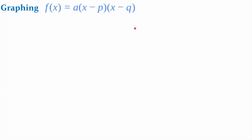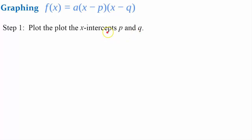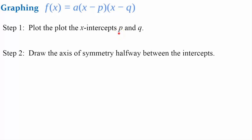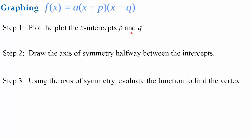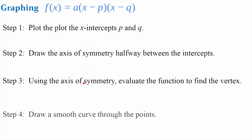Let's go through the steps of graphing a quadratic function in intercept form. First, identify and plot the x-intercepts p and q. Second, draw the axis of symmetry halfway between these intercepts. Third, use the axis of symmetry to evaluate the function and find the vertex — that x-value is your vertex's x-coordinate. Fourth, draw a smooth curve through your points.